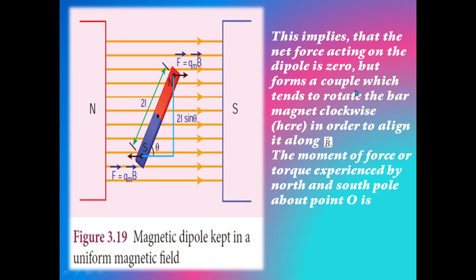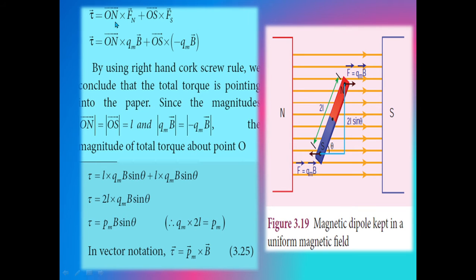But the forces form a couple which tends to rotate the bar magnet clockwise in order to align it along B vector direction. The moment of force, or torque, experienced by the north and south poles about point O is denoted by tau (τ).